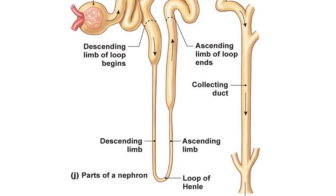The filtrate then dives down into the medulla through the loop of Henle. The ascending limb is permeable only to ions, and active transport pumps sodium, potassium, and chlorine out - this uses ATP and is an energetic process. This makes the medulla really salty, or hypertonic. The descending limb is permeable only to water, and water moves out by osmosis into the hypertonic surroundings, where it gets reabsorbed by surrounding blood capillaries.